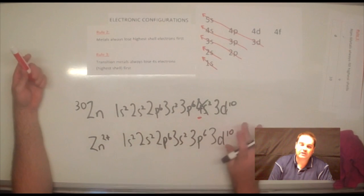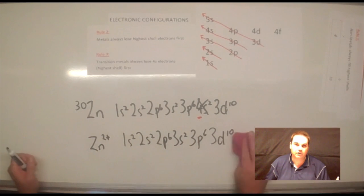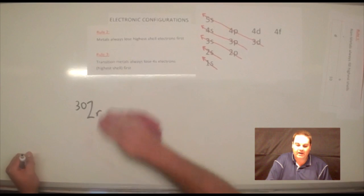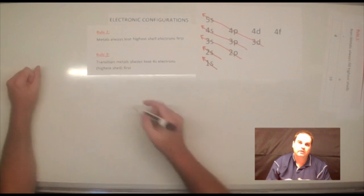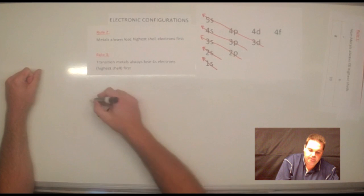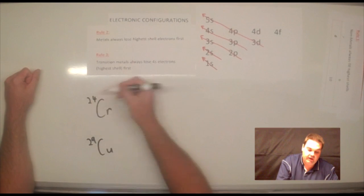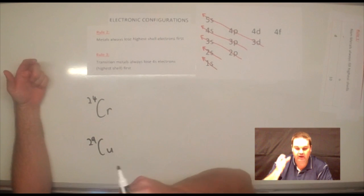Now, you can do that for any of the transition metals. However, there are two very important exceptions which you must learn. And they will always ask you about one of these in the exam because it's in the curriculum. They're either going to look at chromium, which is 24, or they're going to look at copper, which is 29.